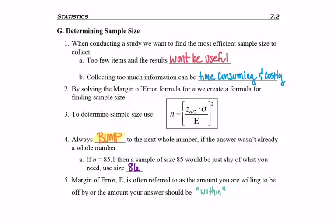You know, we want to be within five people, within 2%. Finding the magic word within often lets you know what's going to be E in the formula for calculating sample size.